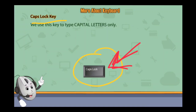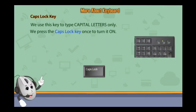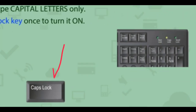This key is used to type capital letters only. Joh aapke alphabets hain, unko capital form mein likhne ke liye hum is key ko use karte hain. Aap sab ko pata hoga, aapke alphabets key small and capital form mein likhe jaate hain. Toh capital form mein likhne ke liye hum Caps Lock Key use karte hain. We press the Caps Lock Key once to turn it on. Jab hum Caps Lock Key ko press karte hain — ek baar sirf ek hi baar press karte hain — toh dekhe yeh light dikhti hai Caps Lock Key ki. Yeh hamari turn on ho jaati hai, green color ki light on ho jaati hai hamare keyboard ke upar.